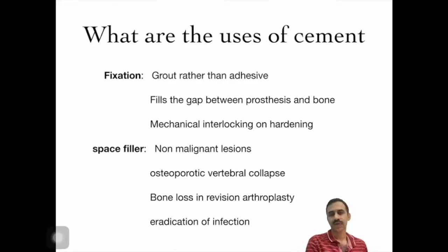What are the uses of bone cement? It can be classified into use as fixation and use as a space filler. When we use cement as fixation, it is actually grout rather than adhesive. It fills the gap between the prosthesis and the bone, and mechanical interlocking happens on hardening. Uses as a space filler include non-malignant lesions, osteoporotic vertebral collapse, bone loss in revision arthroplasty, and eradication of infection.